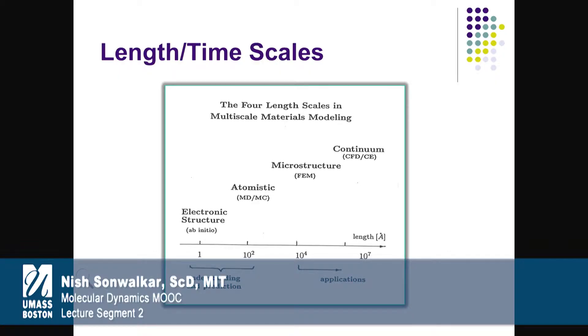That level is what we call the ab initio level, where we can do all the electronic calculations. At the very fundamental level of computation, you can do what we call ab initio calculations, which are based on the atomic structure of the material. An atom has a nucleus, an electronic cloud, and orbitals where electrons move. For water H2O, you look at the atomic orbitals of hydrogen and oxygen, and when they form a hydrogen bond together, we can understand that in terms of ab initio calculation. On the slide, the scale goes from 1 to about 100 angstroms — that's where ab initio calculations apply.